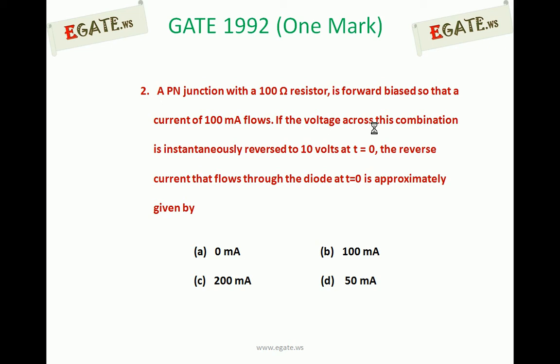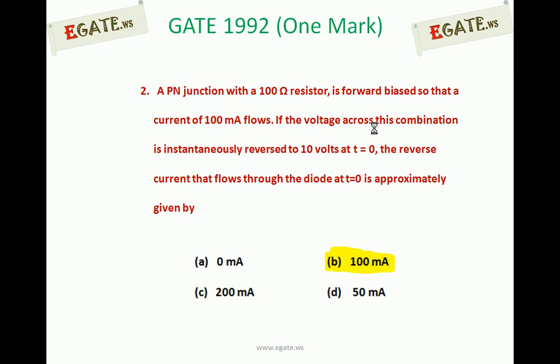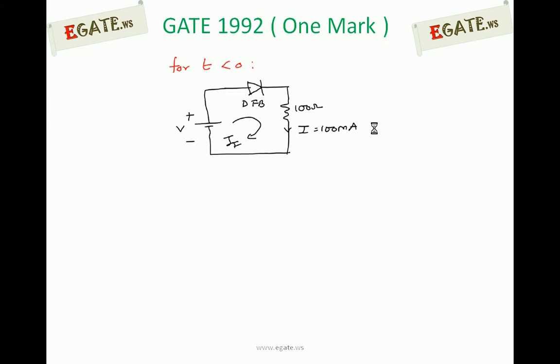Whether it is 0 mA, 100 mA, 200 mA, or 50 mA. The correct option for this question is (b), 100 mA. Before T equal to 0, that is T less than 0, the diode is forward biased such that a current of 100 mA is flowing.